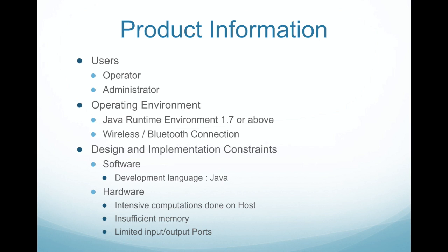Some additional information about the product: there are two users of the system, namely the operator — the person controlling the robot — as well as the administrator. The operating environment for the system will be a Java Runtime Environment 1.7 or above, as well as a communication system between the robot and operator, which will be either Bluetooth or a wireless network. A constraint to bear in mind is that development has to be done in Java, due to the Lejos firmware being an embedded version of the Java Virtual Machine.